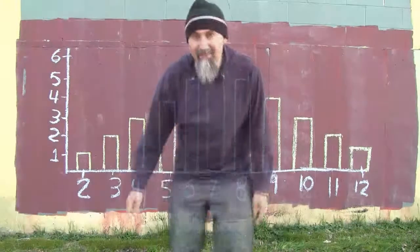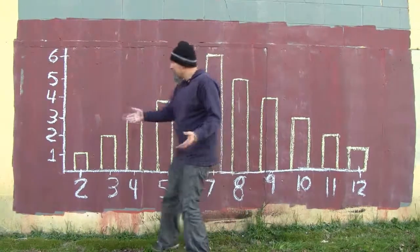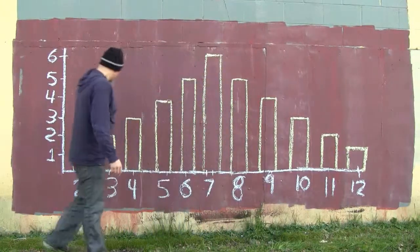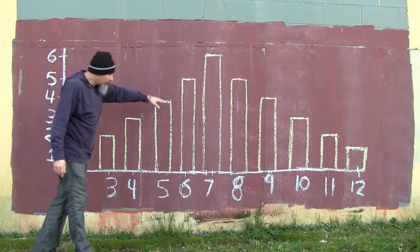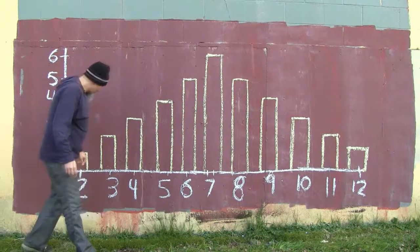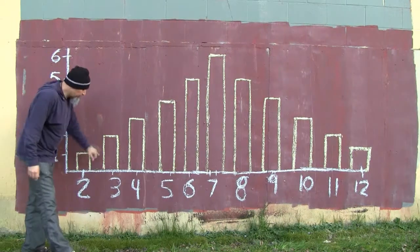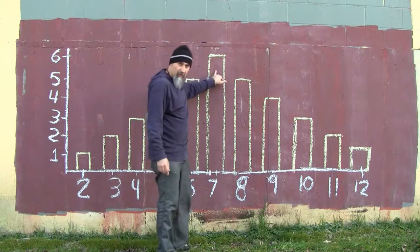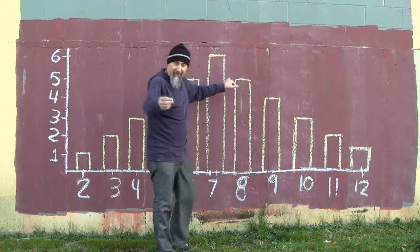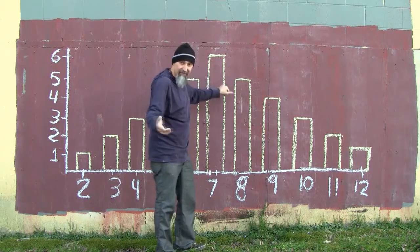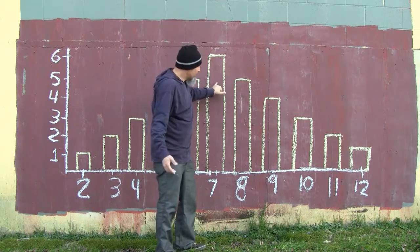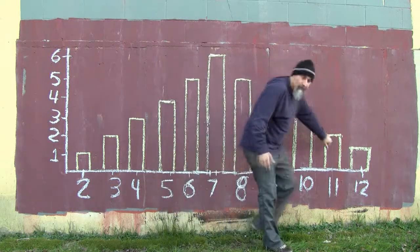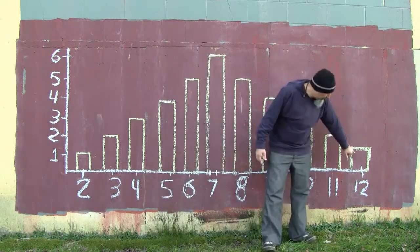This is what the probability distribution looks like for rolling two dice: a bar graph starting at one combination for two, going up — two, three, four, five, six combinations at seven — then back down: five, four, three, two, one for twelve. Seven has the most possible combinations.